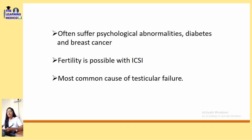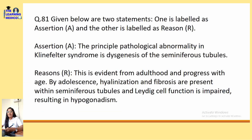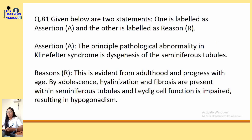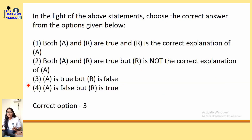Fertility is possible with ICSI. It is the most common cause of testicular failure. The principal pathological change is dysgenesis of the seminiferous tubules — so this is correct. However, the reason states it is evident by adulthood, which is wrong; it is evident from childhood. Therefore, assertion is true but the reason is false. The answer is option number 3.